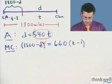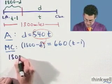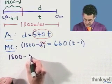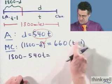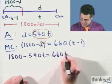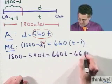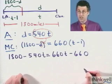If I do that, here's what I get. I see that we have 1,800 minus 540T equals, and let me actually distribute here, I see 660T minus 660.